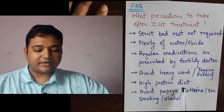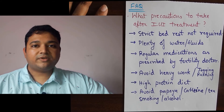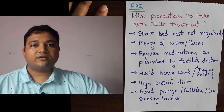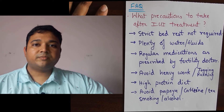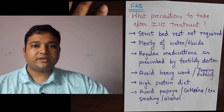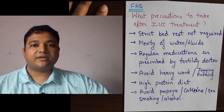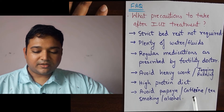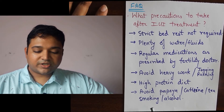We recommend a high-protein diet. If the lady consumes non-vegetarian food, we recommend boiled egg whites — maybe 2 to 3 egg whites per day. If she is a strict vegetarian, we recommend almonds or badams. We strongly recommend avoiding papaya, caffeine and caffeinated drinks, tea, smoking, and alcohol.